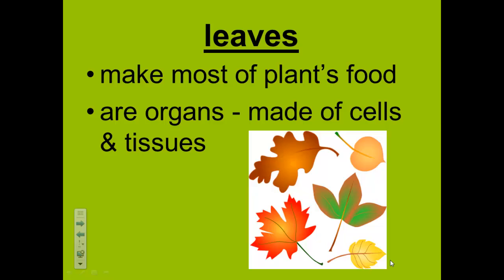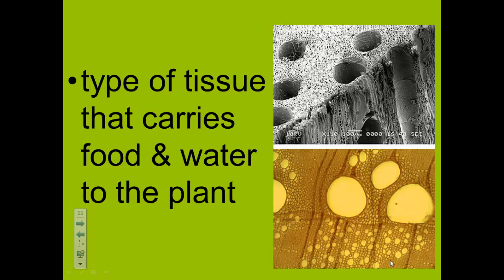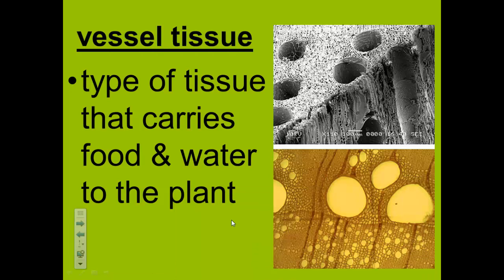The inner tissue looks like a sponge. It has spaces that air can pass through. Tiny openings at the bottom of the leaves can open to let air in and out of the inner tissue. The vessel tissue is also made of cells. They carry food and water through the plant to all other plant parts.